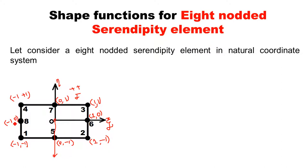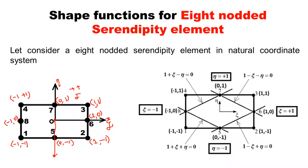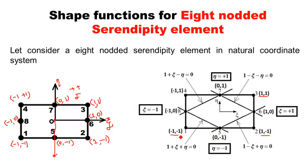Draw one 8-noded rectangular element and show the coordinates of the 8 nodes. Now, apart from the coordinates of nodes, a few more points need to be highlighted. If you join the middle nodes by straight lines — node 5 and 6 with one line, nodes 6 and 7 with another, nodes 7 and 8 with another, and nodes 8 and 5 with another — these are the 4 inclined lines joining the middle nodes.